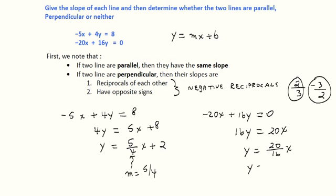And then we can reduce that fraction. 20 over 16 is 5 over 4x. So here the slope is 5 fourths.